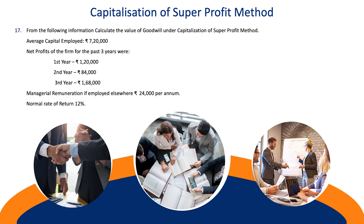Average capital employed: Rs. 7,20,000. Net profits of the firm for the past 3 years were — 1st year: Rs. 1,20,000; 2nd year: Rs. 84,000; 3rd year: Rs. 1,68,000. Managerial remuneration if employed elsewhere: Rs. 24,000 per annum. Normal rate of return: 12%.